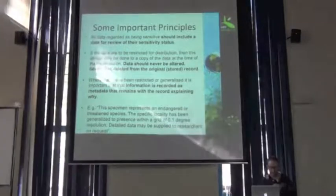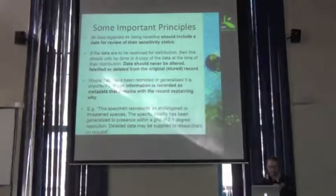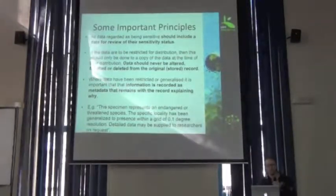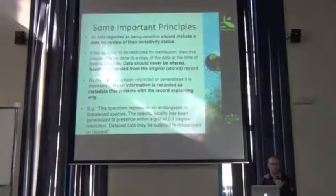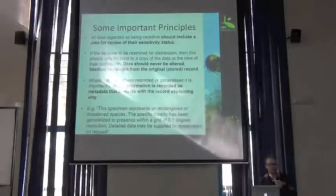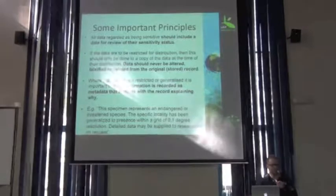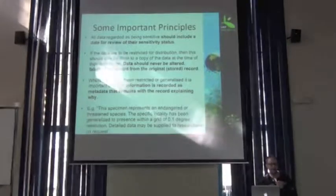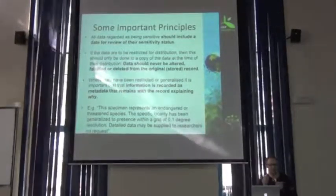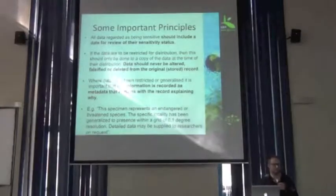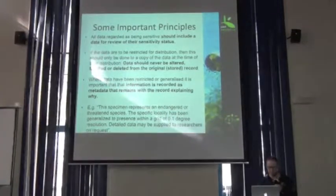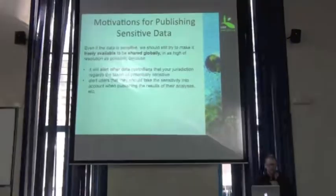You should also indicate the precision of the original data so that users know whether it was precise to begin with. If someone needs data precise to 3 meters of uncertainty, they need to know upfront whether your original data meets that threshold. All that information should be included in the metadata.